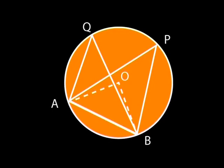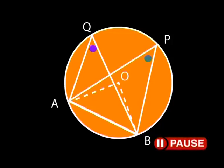Here is the construction needed for this proof. We need to create an angle at O. This should remind you of the theorem about the angle at the center being double the angle at the circumference. Look at the diagram and see if you can prove that the angle at Q equals the angle at P. This is quite an easy proof: the angle at O is twice the angle at Q and also twice the angle at P, so P and Q must be equal angles. We have used the previous theorem to prove this one.